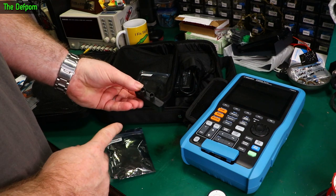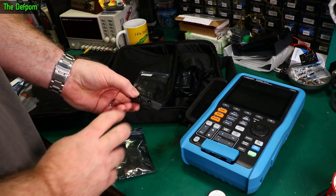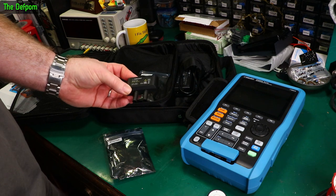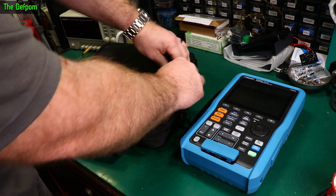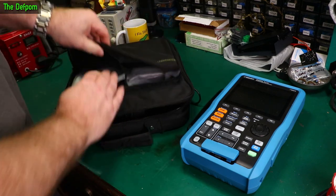These current shunts, by the way. These are standard spacing. So these will plug straight into the front of another meter. I just tried it. And yep it works. Well, it fits anyway. And this case has also got a pouch on the outside. What's in there? Probes.